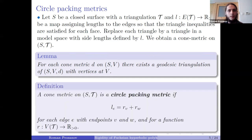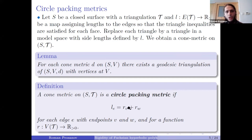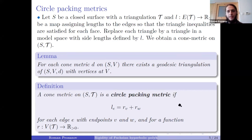A very important particular instance of con metrics is a circle packing metric. A circle packing metric is when we have a positive-valued function on the set of vertices of some triangulation, and the edge lengths are defined for each edge as the sum of the weights at its endpoints. The resulting metric is called a circle packing metric.